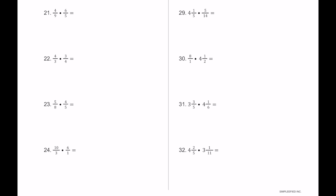For number 21, the composite numbers are 4, 6, and 9. 4 breaks into 2 times 2; 6 breaks into 2 times 3; 9 breaks into 3 times 3; and 5 stays as 5. A 3 on top and a 3 on bottom cancel out. On top, 2 times 2 times 2 is 8, and on bottom 3 times 5 is 15, so 8 fifteenths is our final answer.